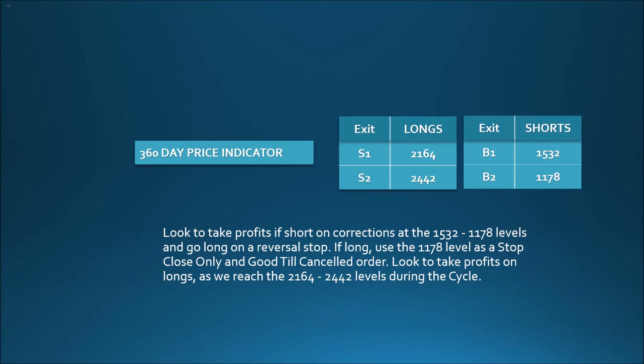Exit Shorts: Buy 1 at 1532. Buy 2 at 1178. Look to take profits if short on corrections at the 1532 to 1178 levels, and go long on a reversal stop.